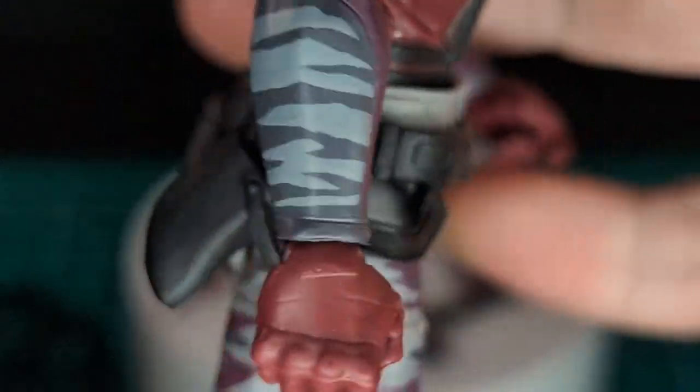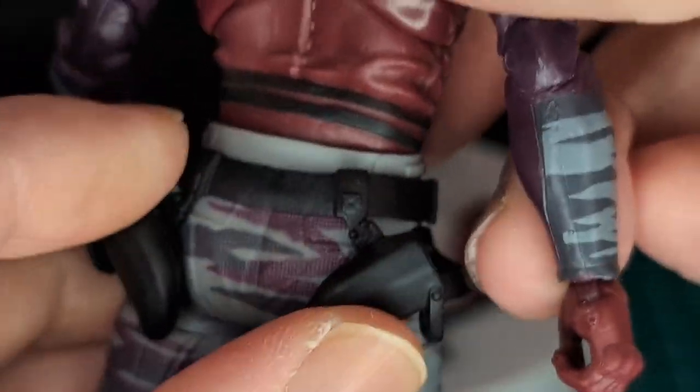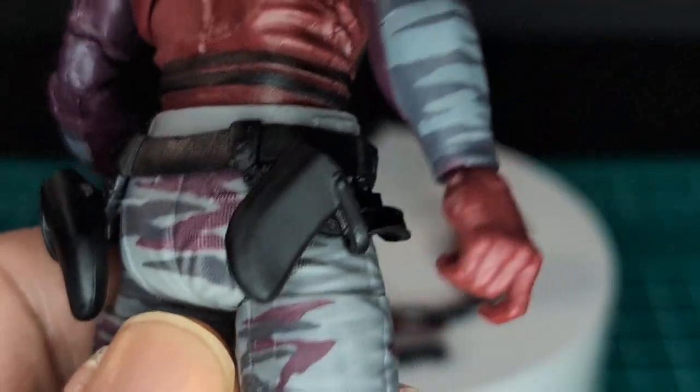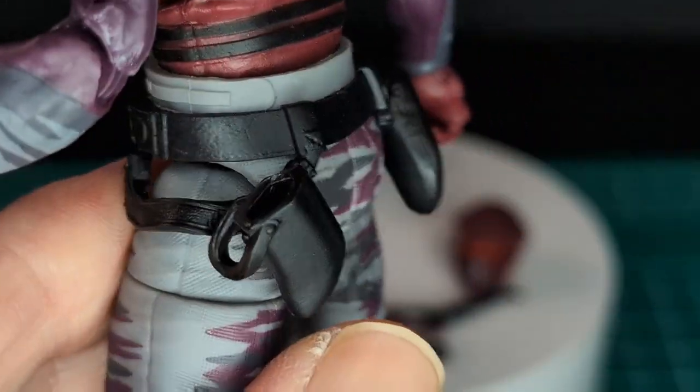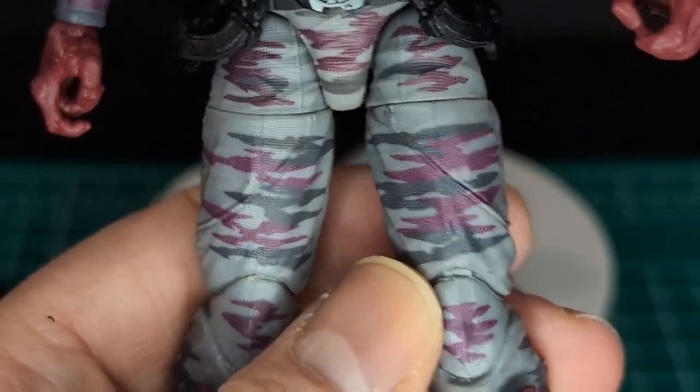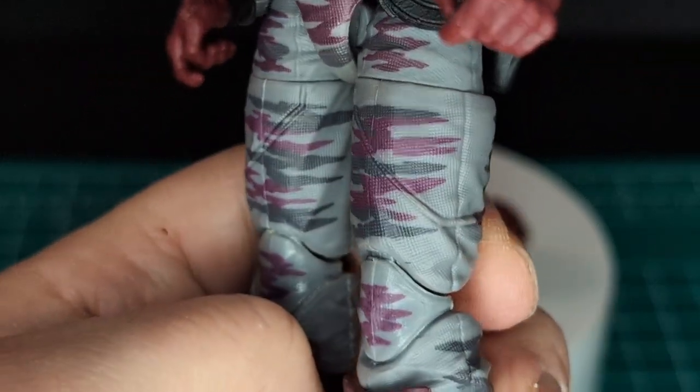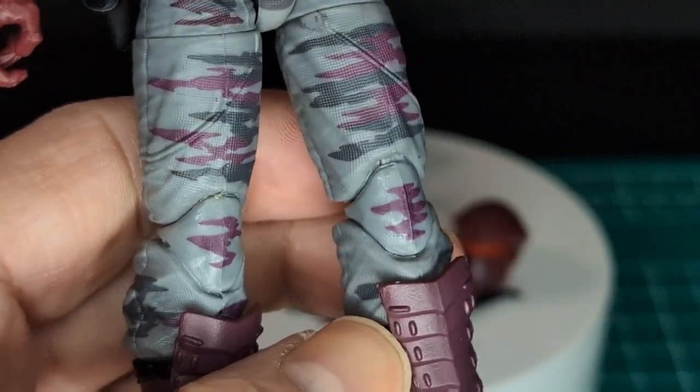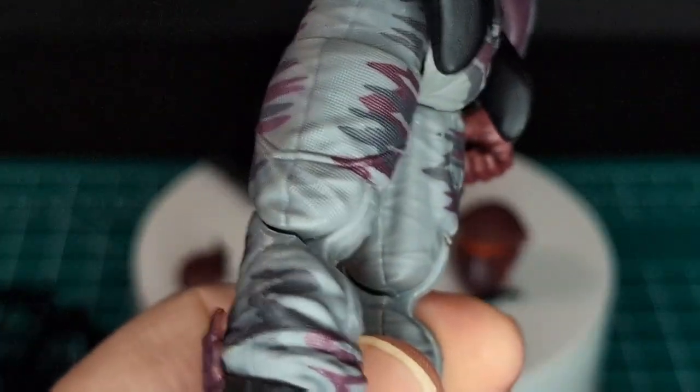On the belt here, we have some holsters to put the blades in or maybe even the swords into. We'll find out later on in this video. So moving down his legs, we have a two color camouflage paint job here that looks really awesome. I like that a lot.